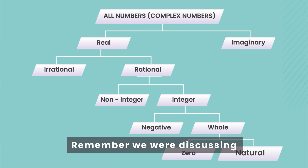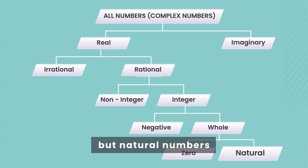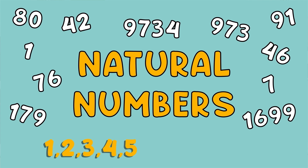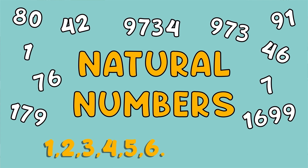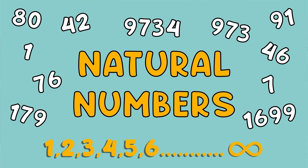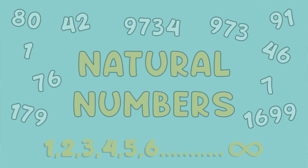Remember, we were discussing counting numbers before? Counting numbers are nothing but natural numbers: 1, 2, 3, 4, 5, 6, and so on till infinity. These are all natural numbers.